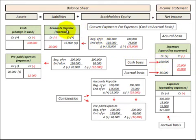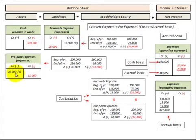For our accrual basis, we set up accounts like accounts payable, which is a liability on the balance sheet, and prepaid expenses, which are assets on the balance sheet. Accounts payable is where we incur an expense before we actually make payments for it. Prepaid expenses is where we pay for an expense prior to using it, and we don't recognize it on our income statement until we actually incur that expense.